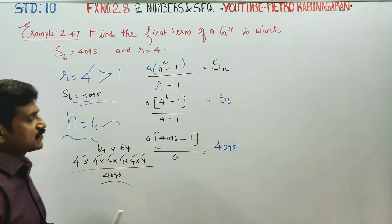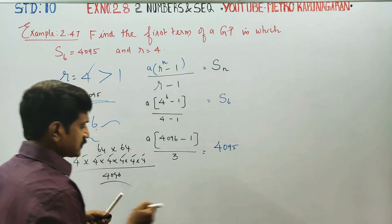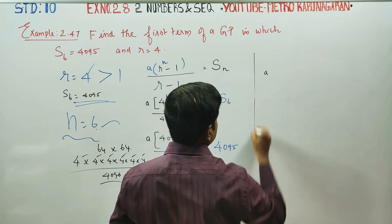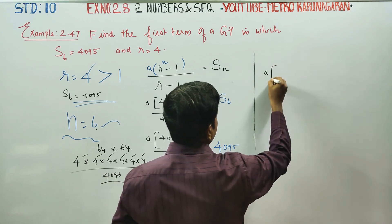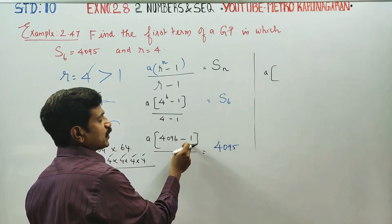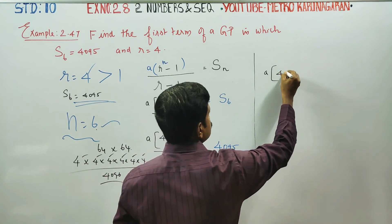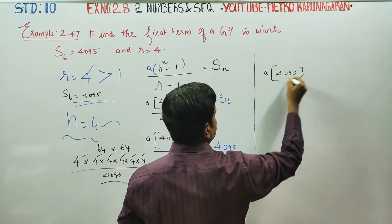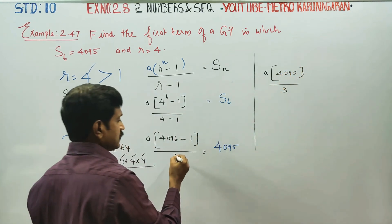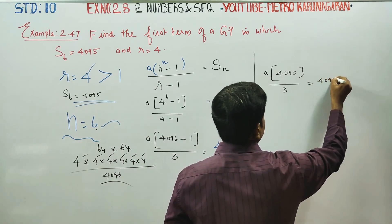S6 equals 4095. That's the stage. A into 4096 minus 1, which is 4095, by 3, is equal to 4095. What do we do?